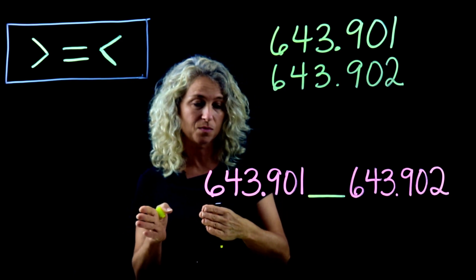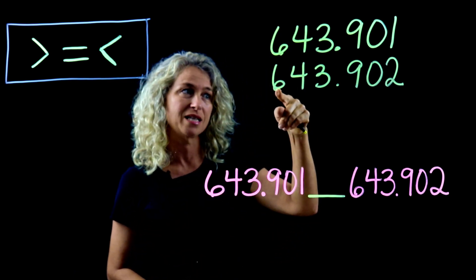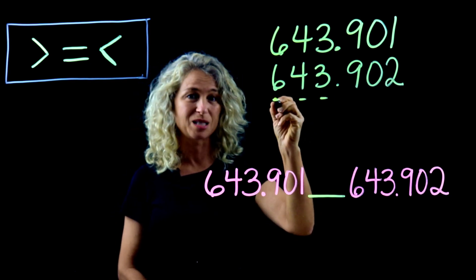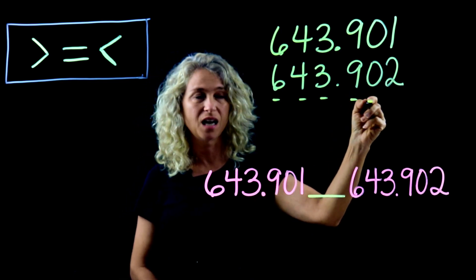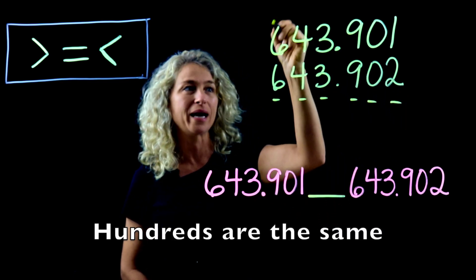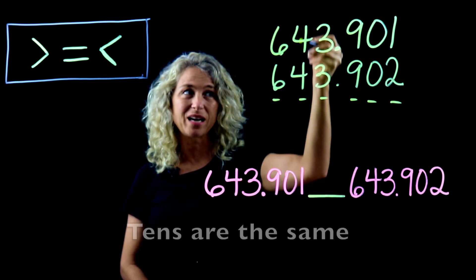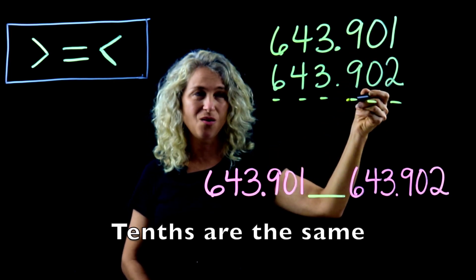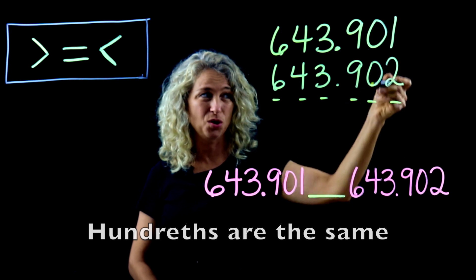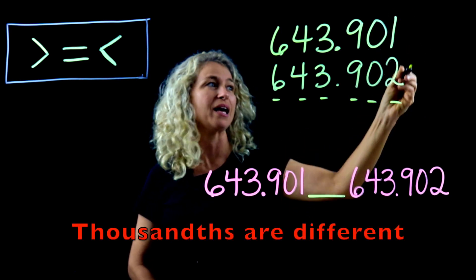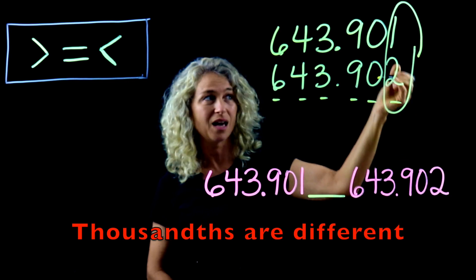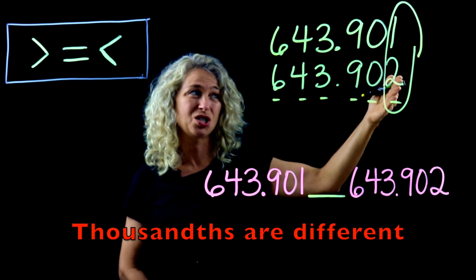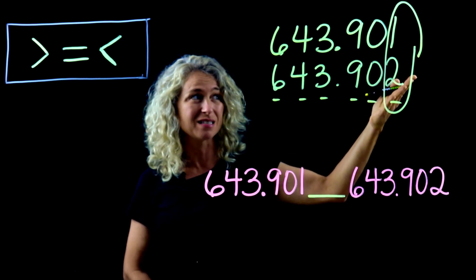When you compare any number, you always start with the greatest value first. We know that this is the ones, hundreds, and tens place — and this is tens, hundreds, thousands. The greatest values are the same, the next greatest values are the same, then the next are the same. So you continue on and notice that when you come to the thousandths place, these two values are different.